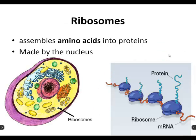Ribosomes — these are crucial for cells to be able to function, because they assemble amino acids into protein. Amino acids are floating all around the cytoplasm, and the ribosome grabs them and smashes them together to assemble polypeptides. These ribosomes are made inside the nucleus. They can be floating all over the cytoplasm, or stuck on that reticulum thing outside the nucleus. Here's a picture of ribosomes cranking out some protein.